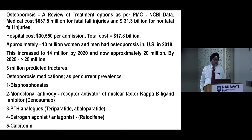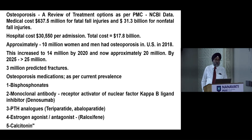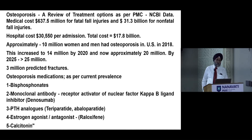As of 2018, 10 million women had osteoporosis, with projections of over 25 million by 2025 and 3 million predicted fractures. Currently, osteoporosis medications in use include bisphosphonates, monoclonal antibody RANK ligand inhibitor denosumab, PTH analogs teriparatide and abaloparatide, estrogen agonist-antagonist raloxifene, and calcitonin.